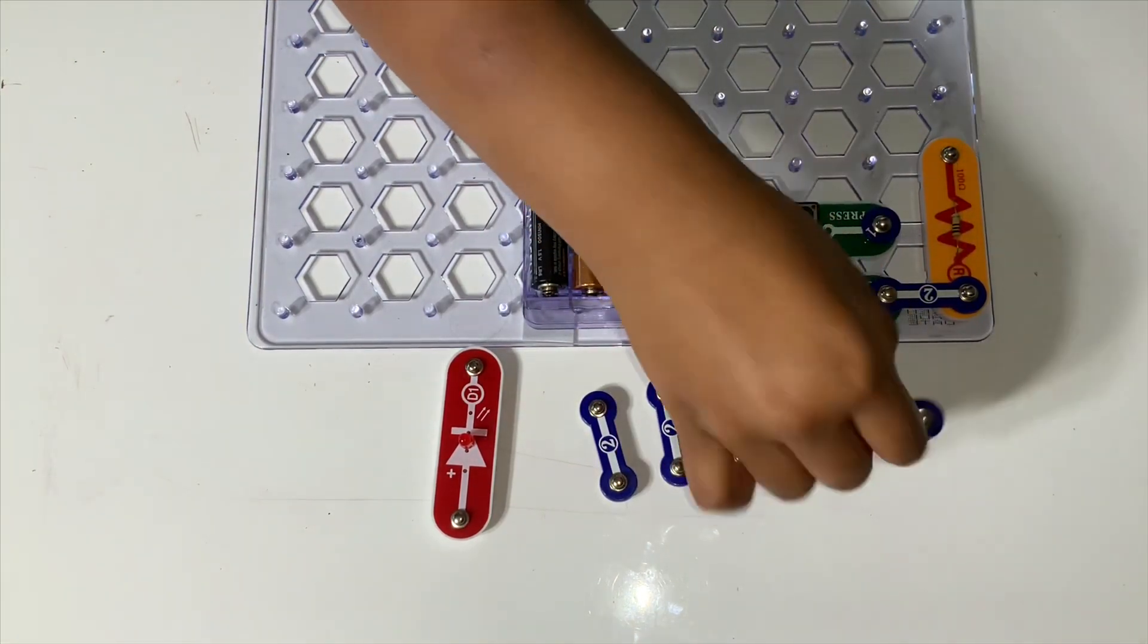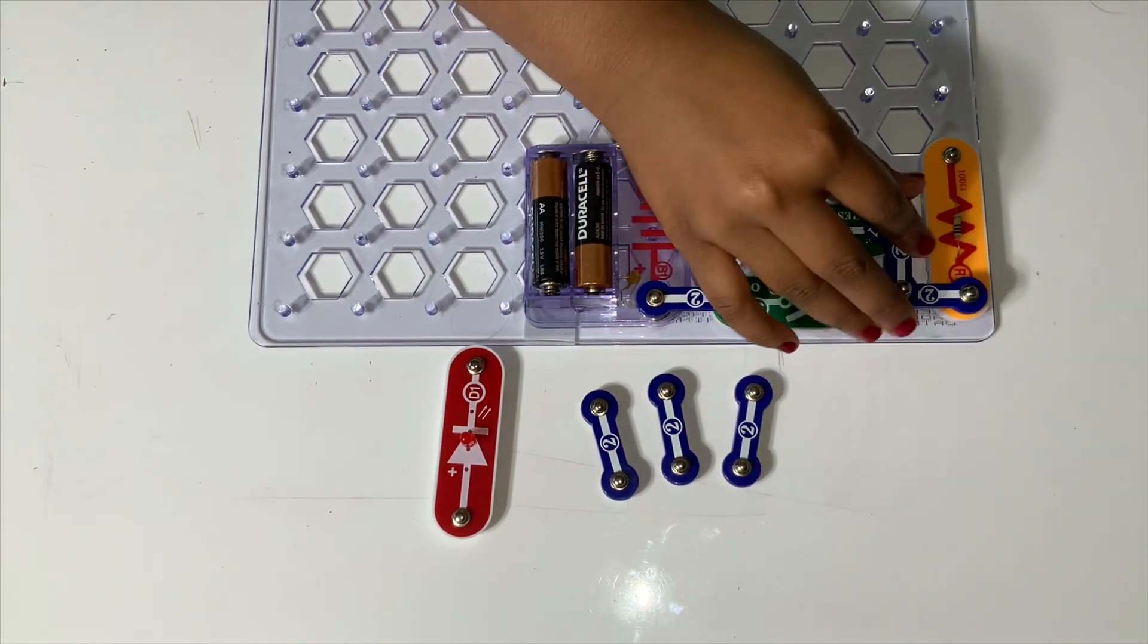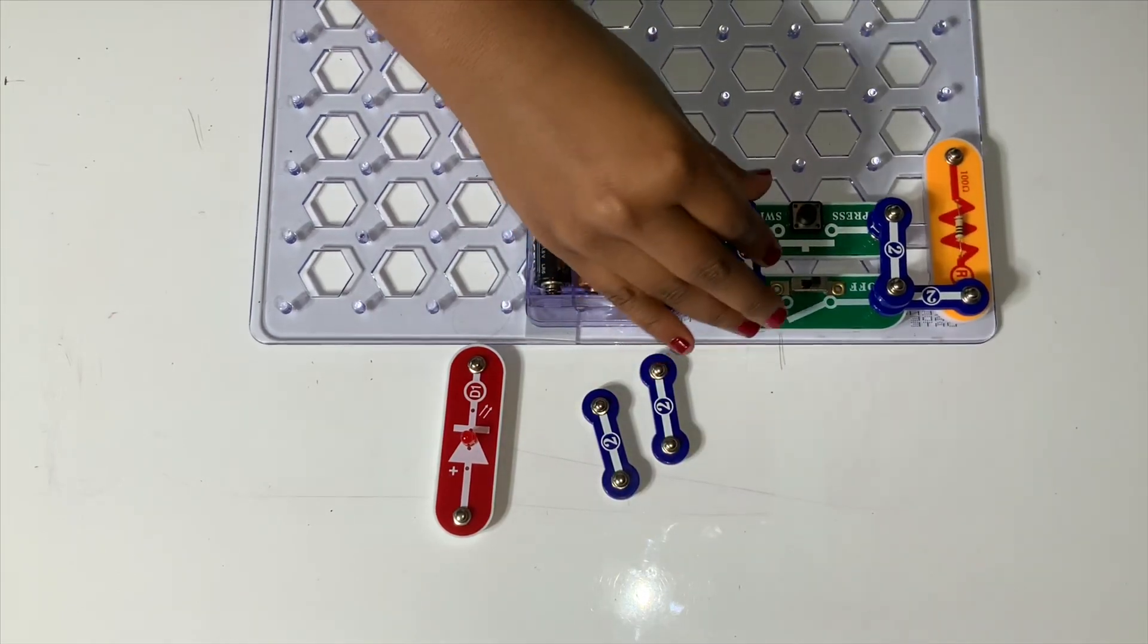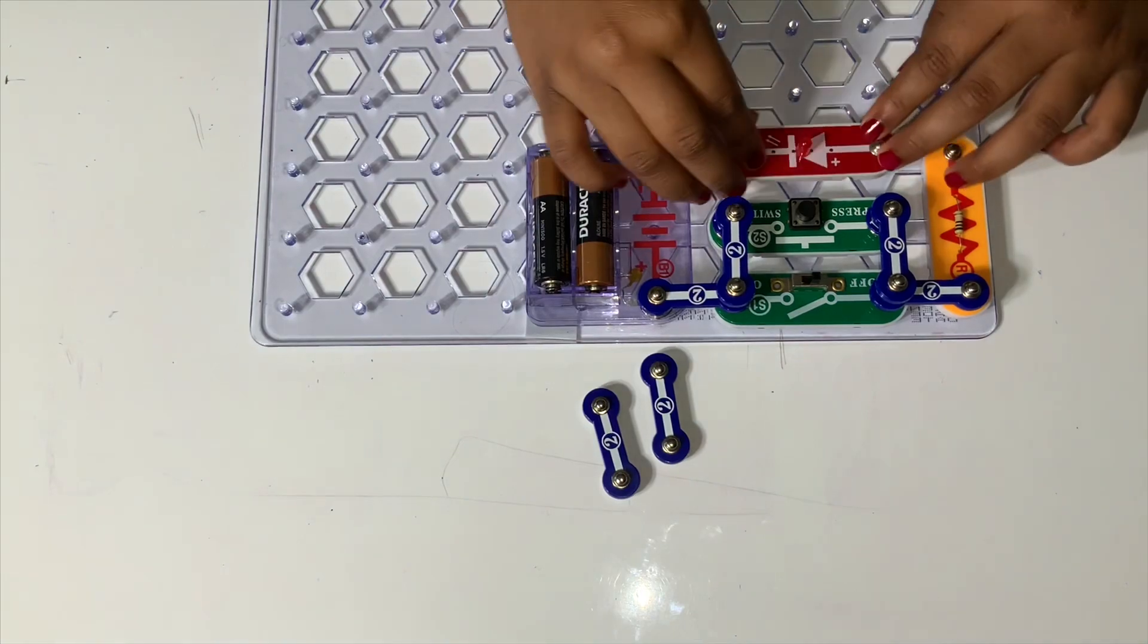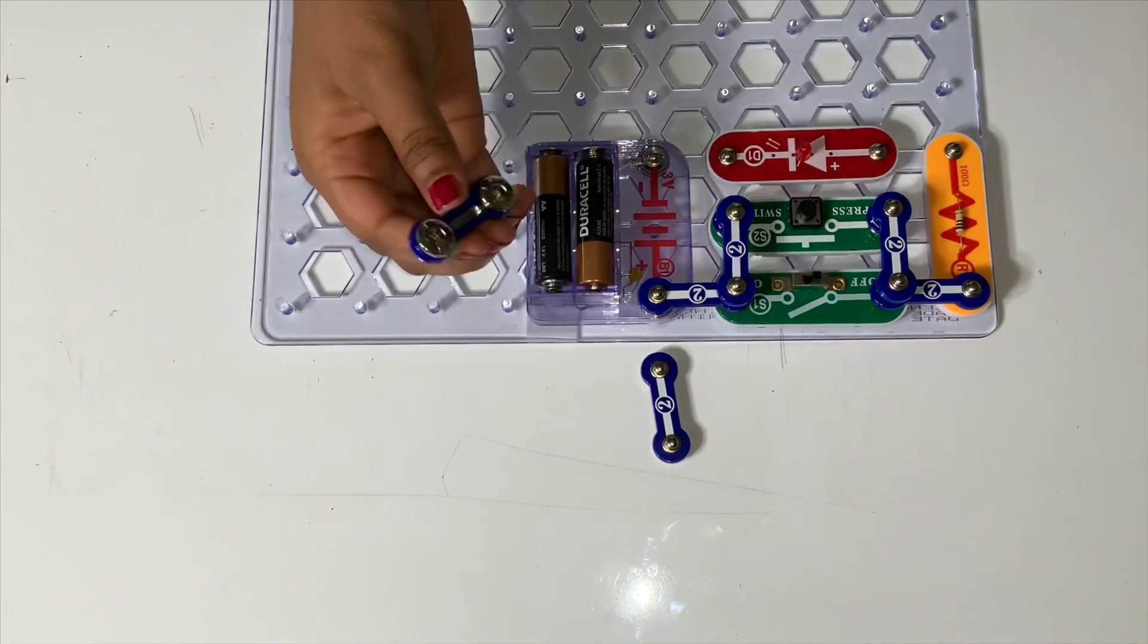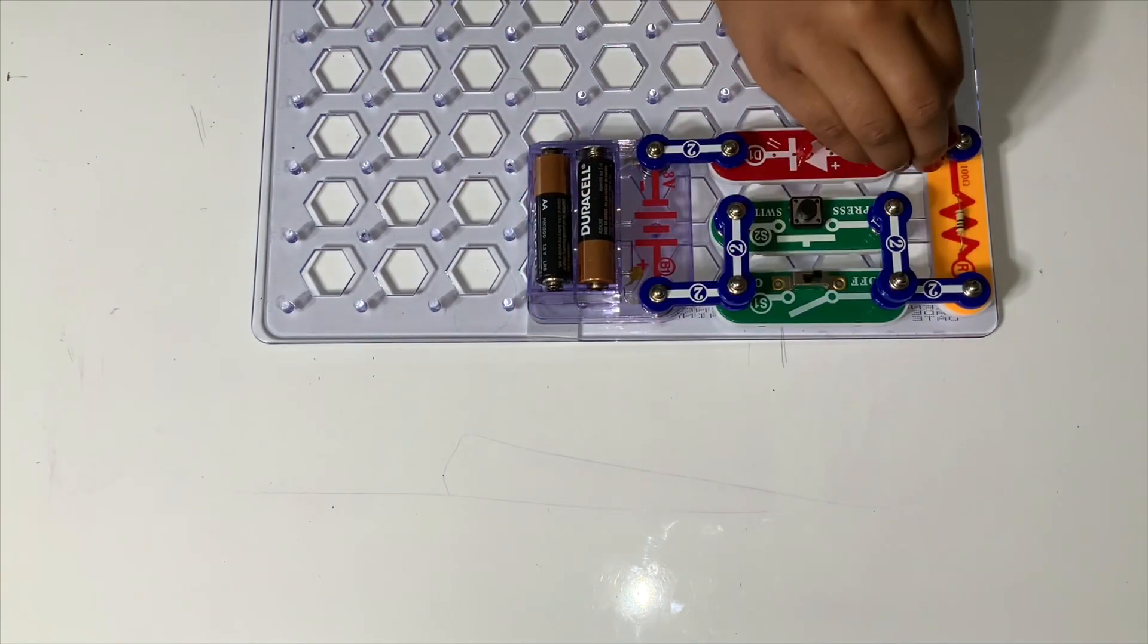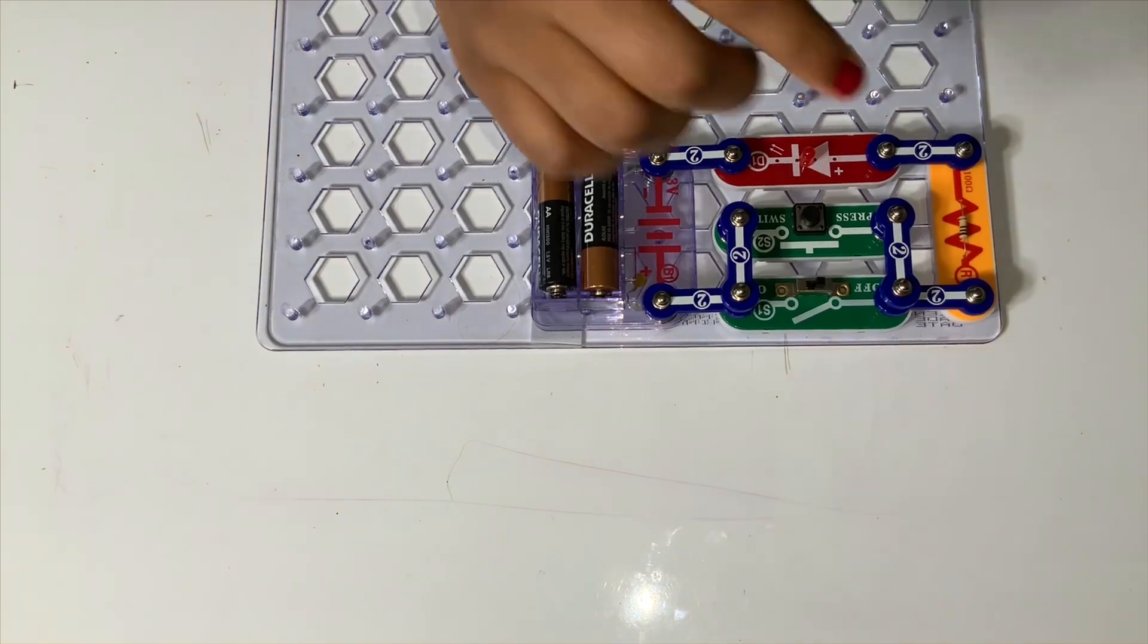Now, put the two snap wire right over here and the other two snap wire right over here. Place the light emitting diode right over here. Now, put the two snap wires like this. Now, our project is right done.